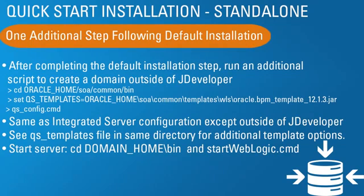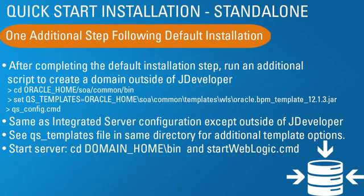For standalone installation, there's just one more thing to do after completing the default installation. Go to the SOA common bin directory in your Oracle home, set your TEMPLATES environment variable — this tells the config script what you want installed using pre-configured templates, and this is the BPM one. Then run the qsconfig command file script. The server you get is exactly the same as the integrated server configuration, except it lives outside of JDeveloper. There's also a file called qsTemplates in the same directory that lists all additional templates you could specify. When done, start the server — go into your domain home bin directory and run the startWebLogic command file.